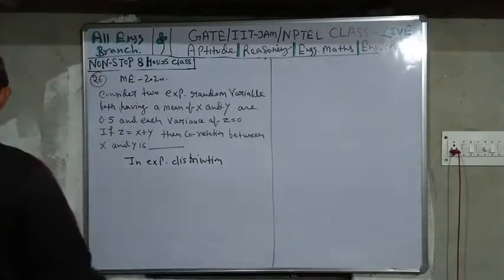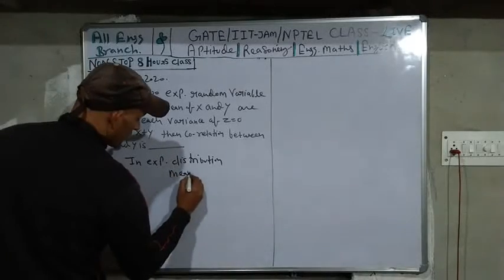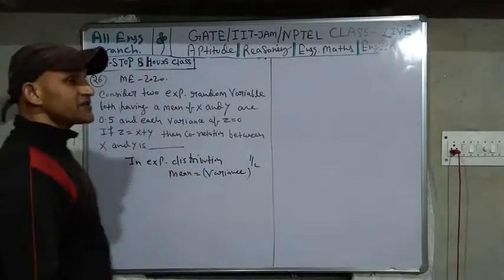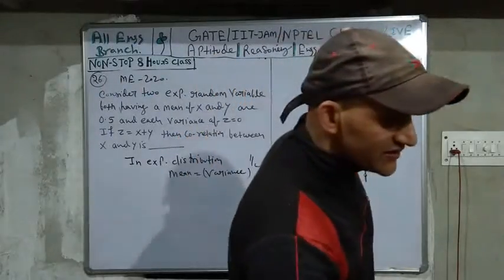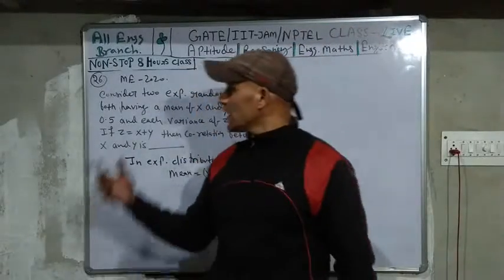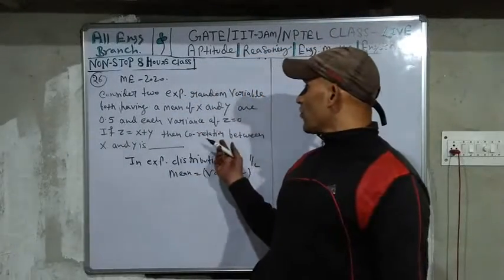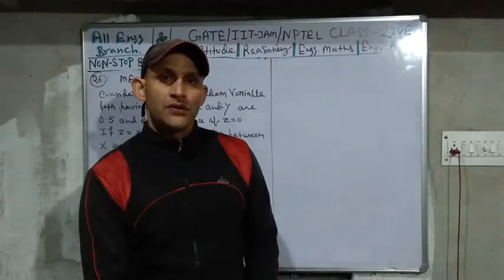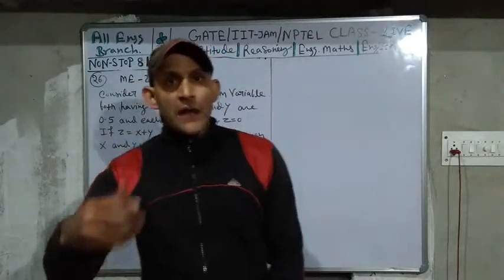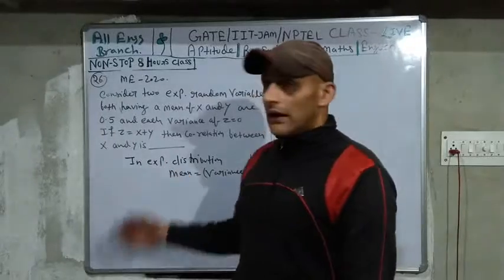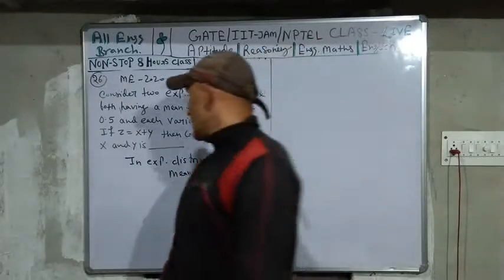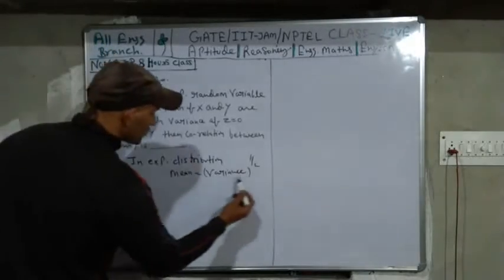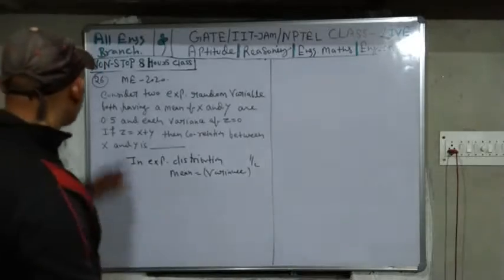In the exponential distribution, mean equals variance to the power one-half, meaning variance equals mean squared. Topics such as correlation, covariance, coefficient, skewness, and regression have been covered in many video lectures available on the channel. This is question number 26 in the series solving all GATE 2020 questions across all branches.